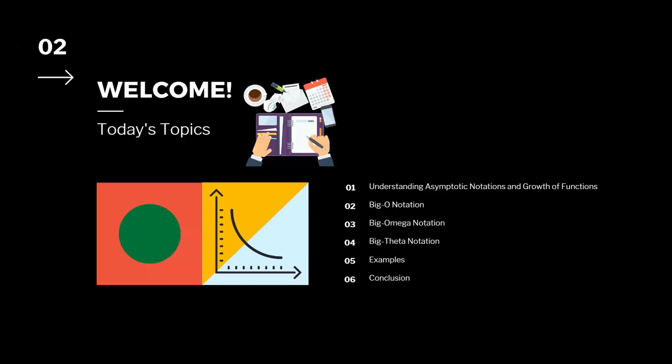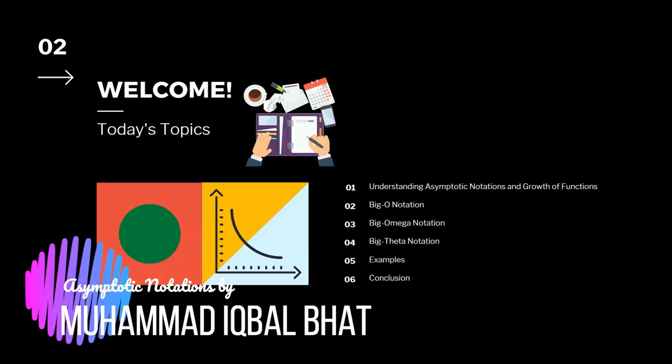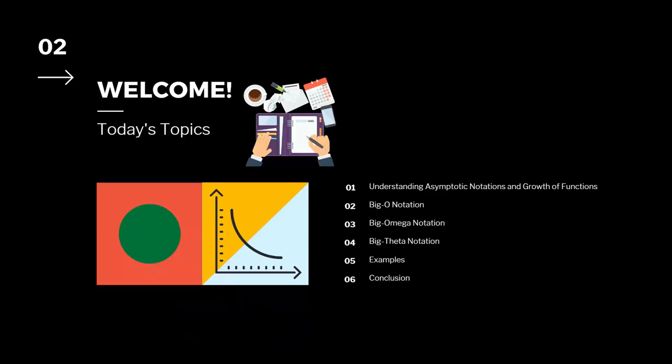The topics we are going to cover in this video: first, we will have an understanding of what asymptotic notations are and what is growth of functions. Then we will cover different asymptotic notations starting from Big O notation, then Big Omega notation, then Big Theta notation. We will do some examples and finally conclude today's lecture.